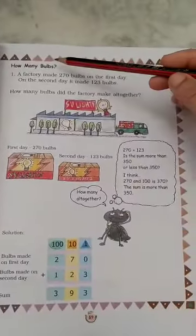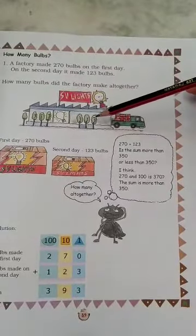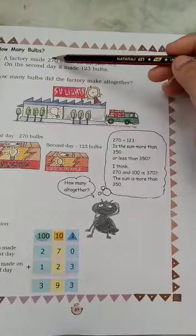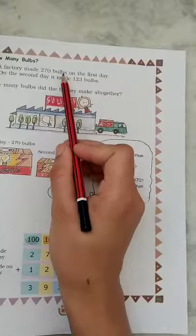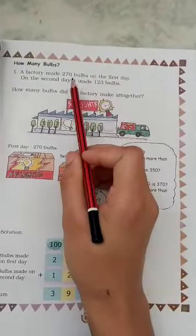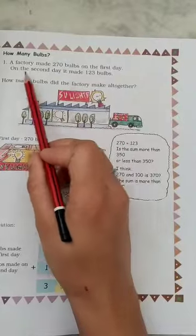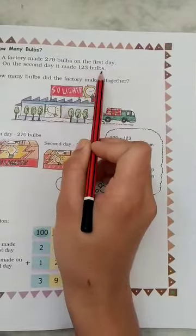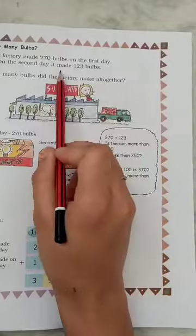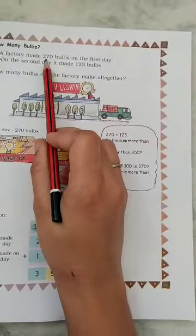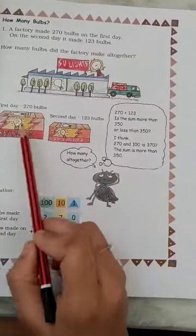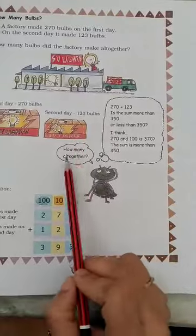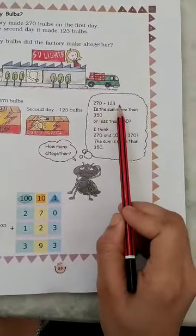Next, how many bulbs? A factory made 270 bulbs on the first day, 270. On the second day, 123. How many bulbs did the factory make altogether? So what will they do? 270 plus 123, add. How many altogether, 270 plus 123.